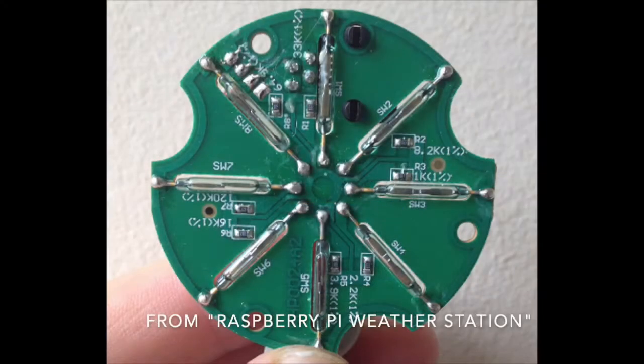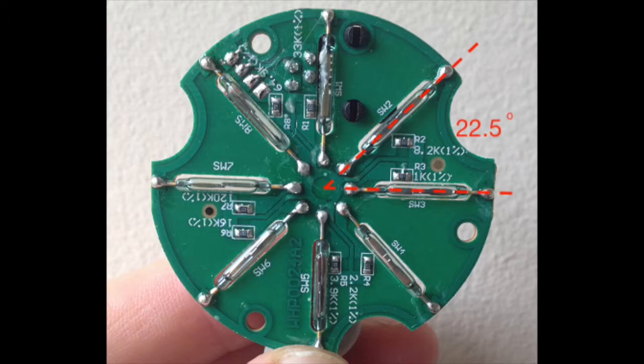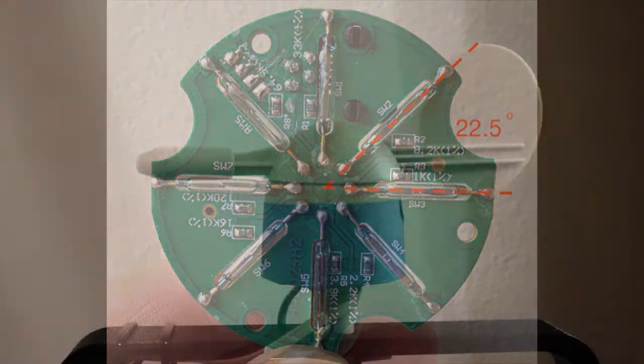This wind vane operates using eight reed switches and eight unique resistors positioned 22.5 degrees apart. A magnet is attached to the rotary part of the wind vane. As the wind vane rotates, the magnet closes the nearest reed switch.